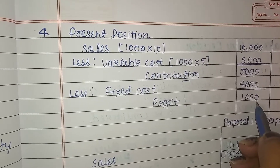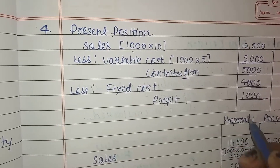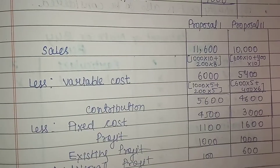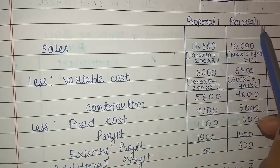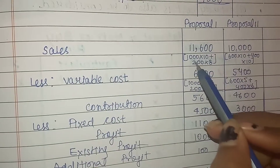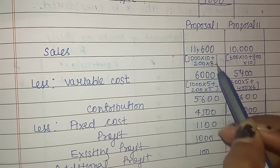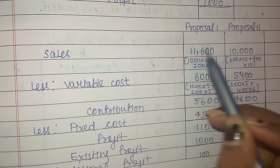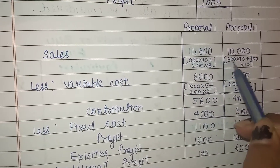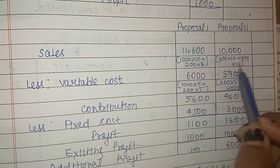In the present situation, profit is ₹1,000. Now let's evaluate which proposal to accept — first or second. For Proposal 1: Sales = (1000 × ₹10) + (200 × ₹8) = ₹10,000 + ₹1,600 = ₹11,600. For Proposal 2: Sales = (600 × ₹10) + (400 × ₹10) = ₹10,000.